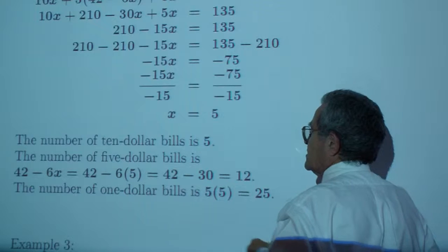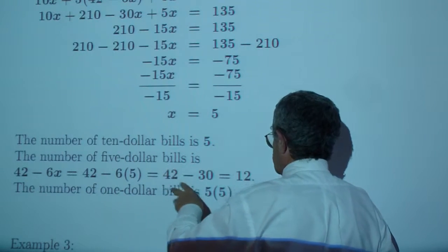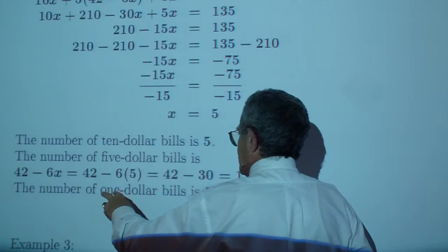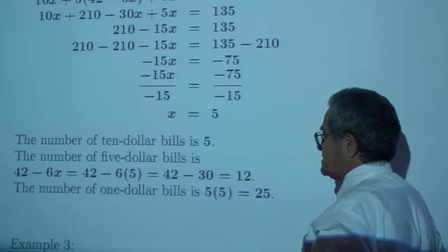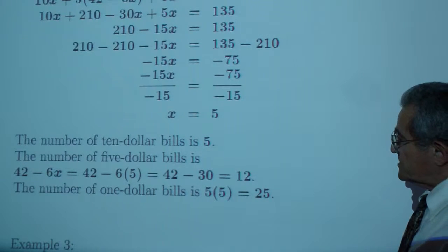So, the number of $10 bills was 5, the number of $5 bills was 12, and the number of $1 bills is 25. Let's take a look at example 3.